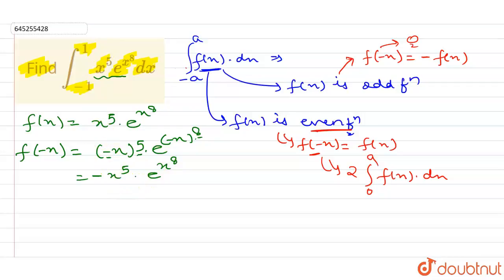So I can write here x power 8. So this part, x power 5 into e power x power 8, this is our f(x). So I can write here minus of f(x).